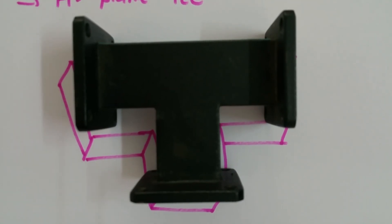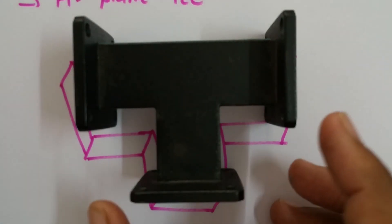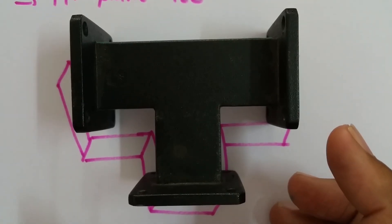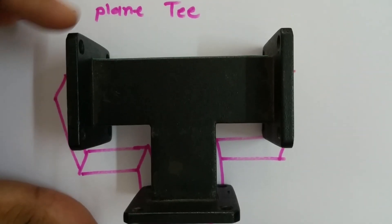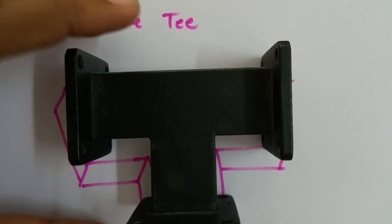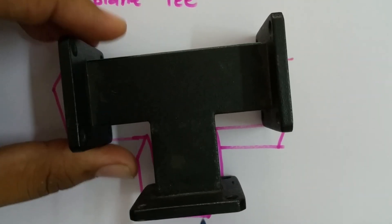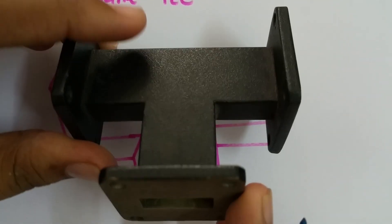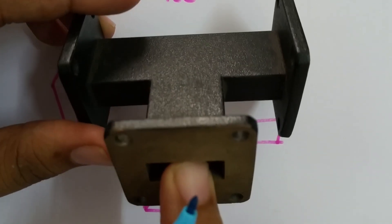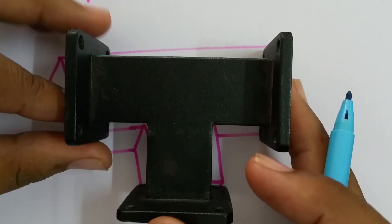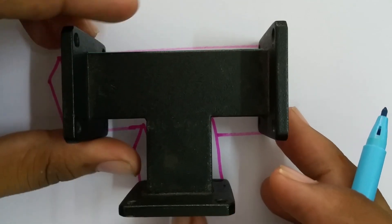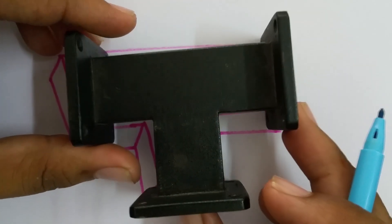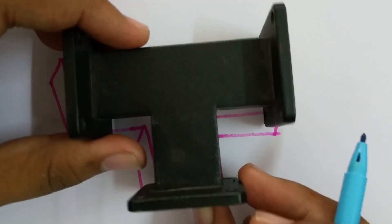In this session, I will be discussing H-plane T: how H-plane T functions, and how to calculate the scattering matrix of H-plane T. Here you can see H-plane T in this video, where this is the H-arm, and these are the two wings of H-plane T. To understand how this H-plane T functions, let us consider what happens if we give input to the H-arm.